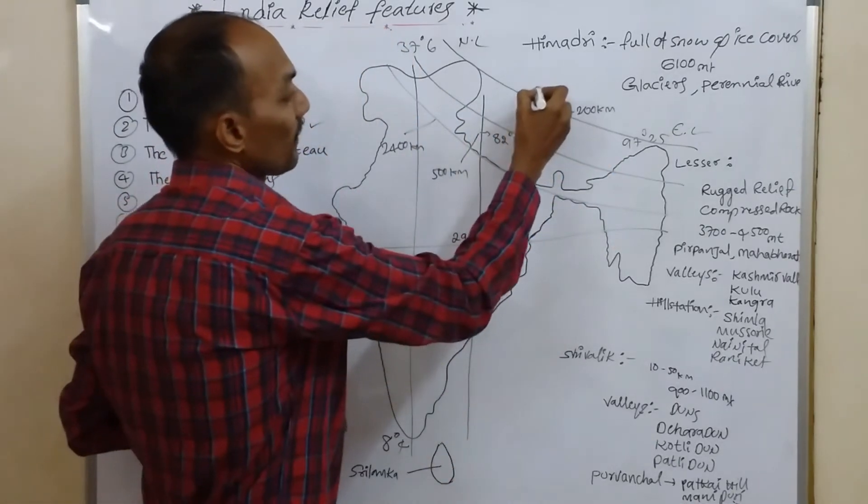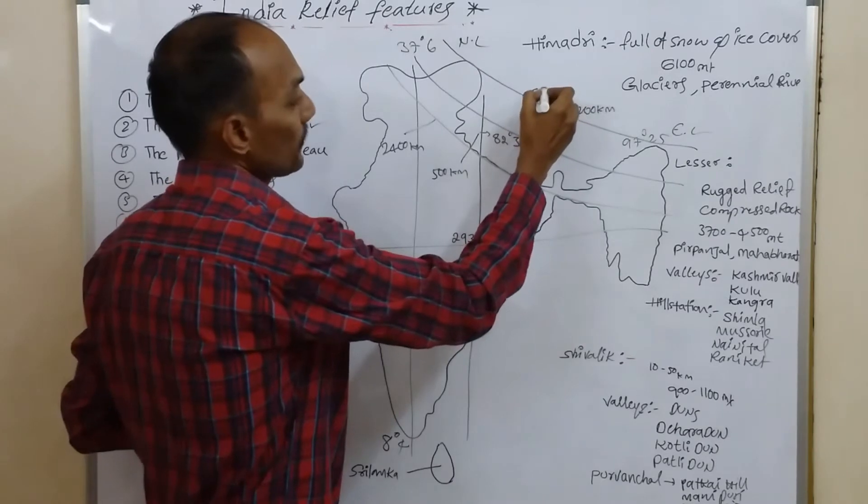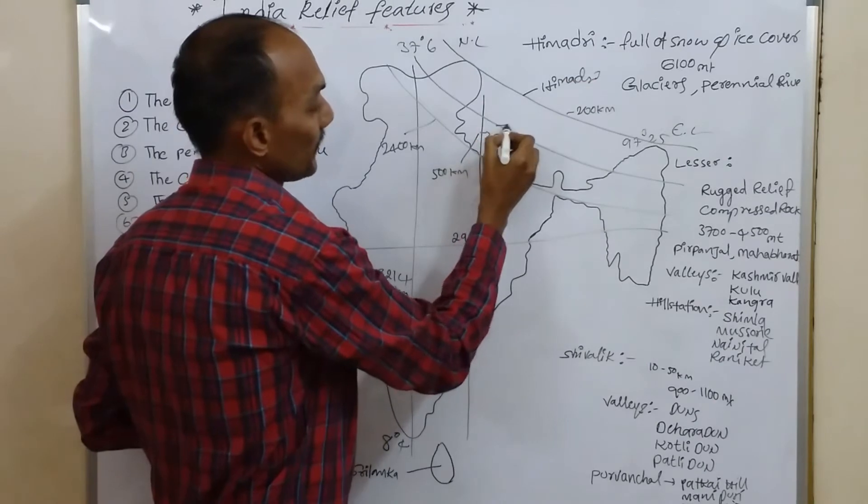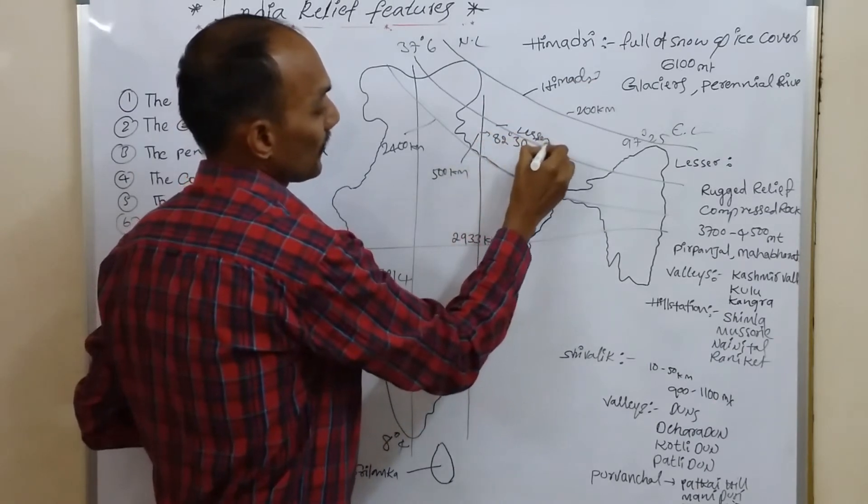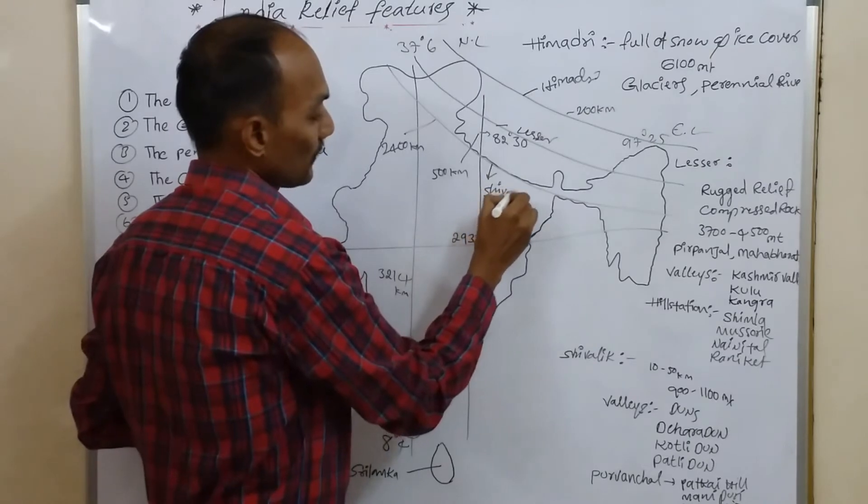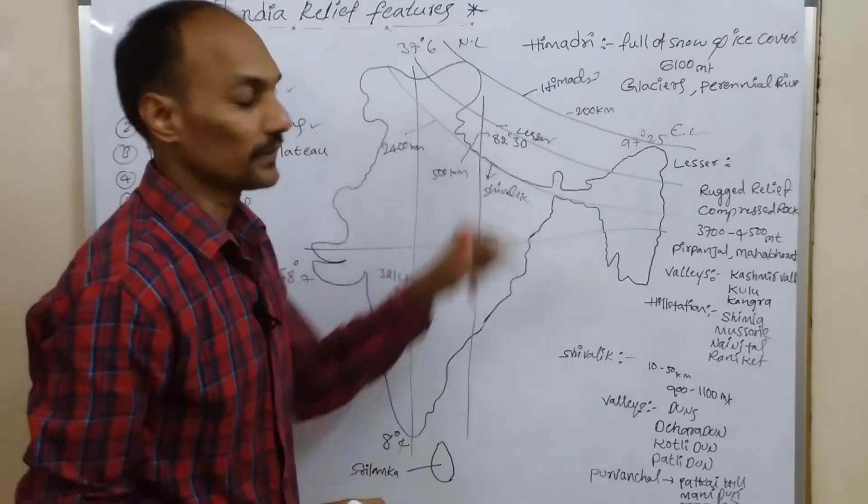These Himalayas are divided into three parallel ranges. What are they? Himadri, the northernmost range, middle Lesser Himalayas, and southernmost Shivalik.